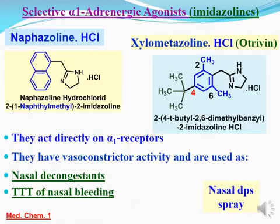المنبر التاني زيلوميتازولين. زيلو جاية من xylene اللي هو الجزء الأزرق - xylyl أميدازولين. وقلنا لما بتكون xylyl لازم تكون substituted على الـ para position زي شان tertiary butyl. الأميدازولينز اللي منها الـ naphazoline أو الـ xylometazoline دي selective alpha-1 adrenergic receptor agonist. بتستخدم كـ nasal decongestant وto treat nasal bleeding. Available as nasal drops أو spray.